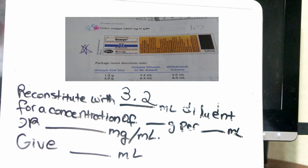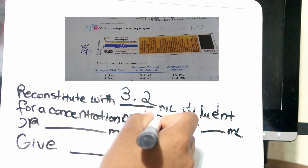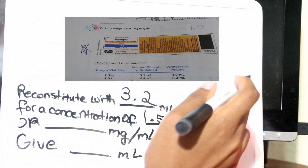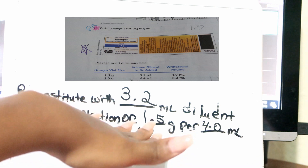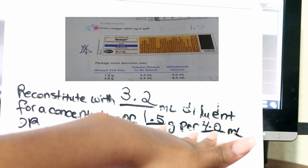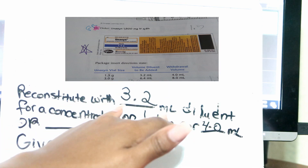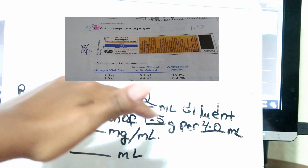We already know it's 1.5 grams because that's what the package insert says. For the 'per mL' part, you're going to use the withdrawal volume. The withdrawal volume next to 'diluent to be added' says 4.0, so 4.0 is going to be your milliliters. According to the package insert, if you have a 1.5 gram vial of Unison, you're going to have 4.0 mL of total volume, because there's 1.5 grams of medication and once you add 3.2 mL, you get a total of 4.0 mL.